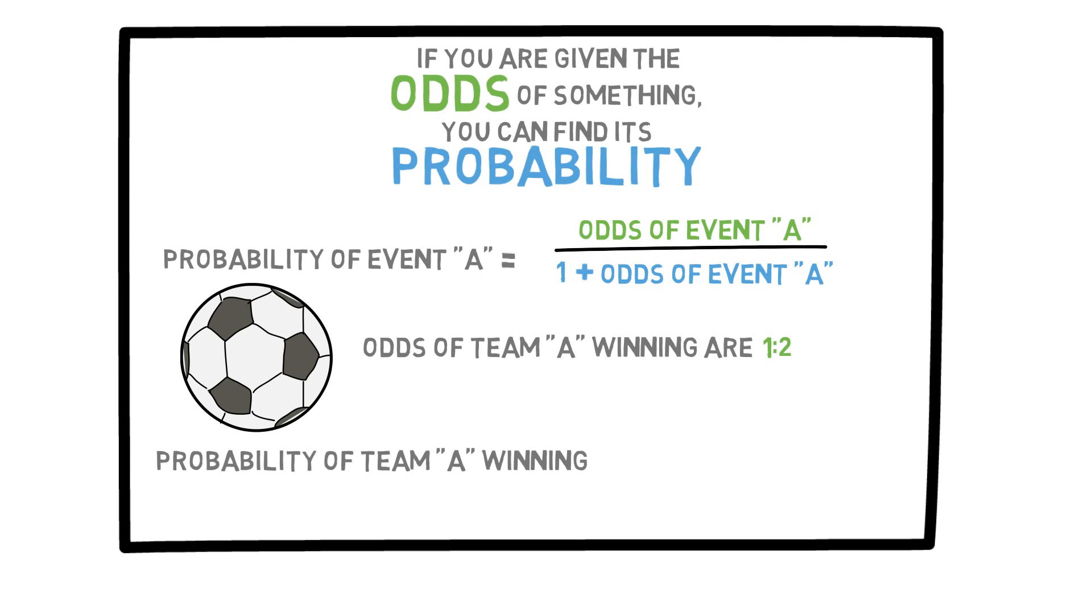So the question is, what is the probability of team A winning? So we just use the simple formula where the probability is odds divided by one plus odds, which is one half divided by one half plus one, which equals one-third.